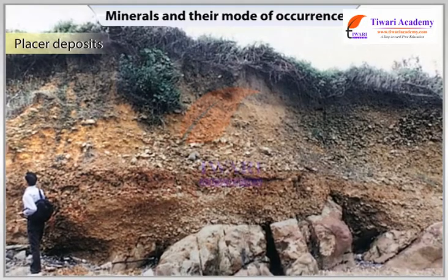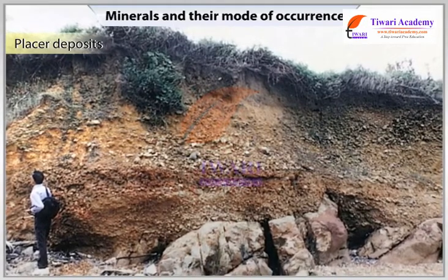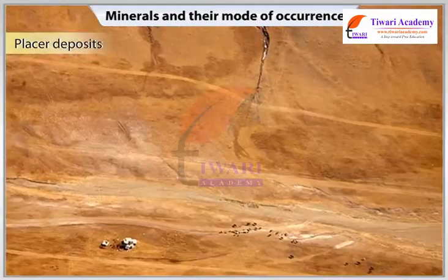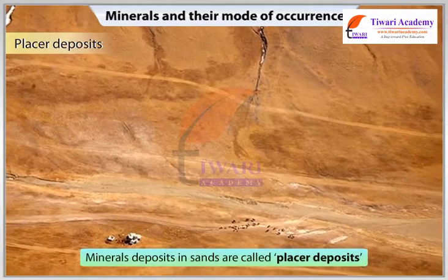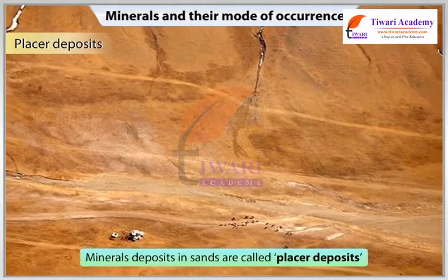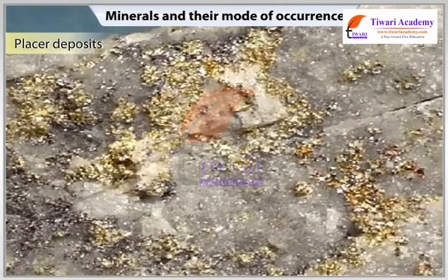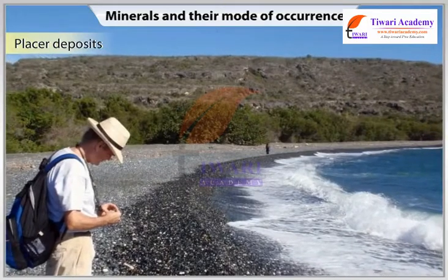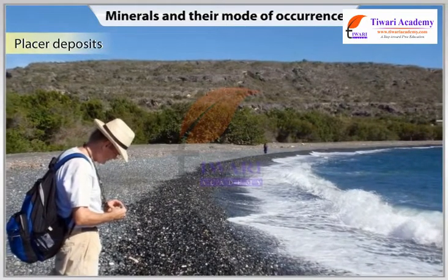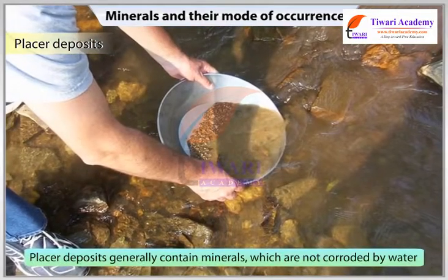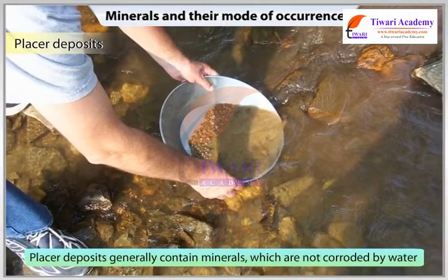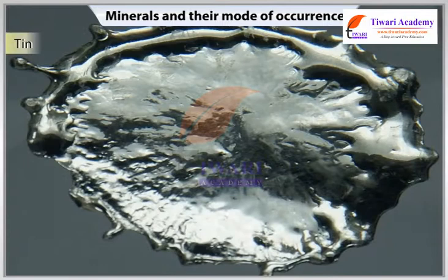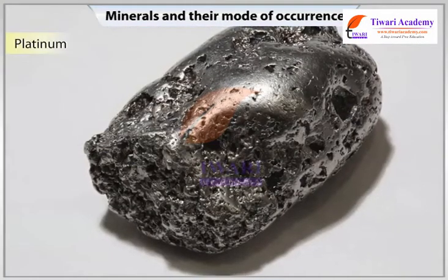Placer deposits: certain minerals may occur as alluvial deposits in sands of valley floors and the base of hills. These minerals deposited in sands are called placer deposits. Alluvial placers are formed by the deposition of dense particles at a site where water velocity remains below that required to carry them further. Placer deposits generally contain minerals which are not corroded by water. Gold, silver, tin and platinum are the most important among such minerals.